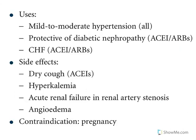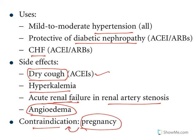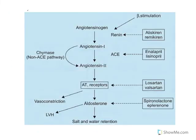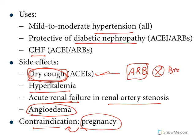The uses of these drugs include hypertension, diabetic nephropathy, and congestive heart failure. The major side effects are dry cough with ACE inhibitors, hyperkalemia, and they may cause acute renal failure in renal artery stenosis and angioedema. They are contraindicated in pregnancy. When patients have severe cough, angiotensin receptor blockers can be used instead of ACE inhibitors, because ARBs do not cause cough — they do not affect bradykinin metabolism.